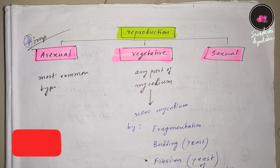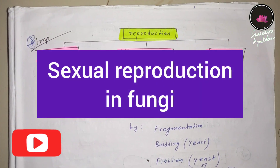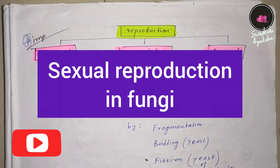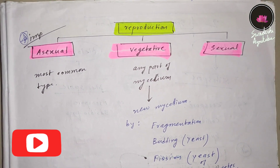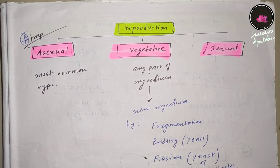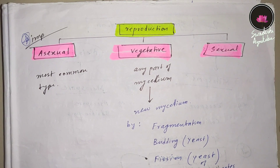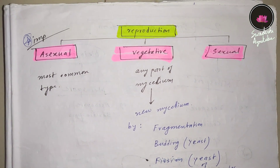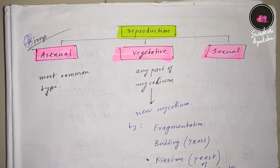Sapkho Namaskar. In this video we are going to talk about the sexual reproduction of fungi. Fungi shows asexual, vegetative and sexual reproduction. Asexual reproduction is the most common type, but sexual reproduction is important from an exam perspective.